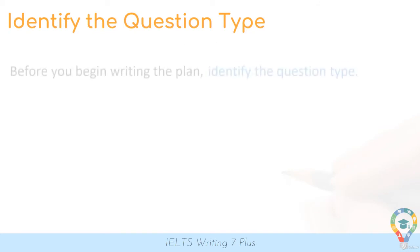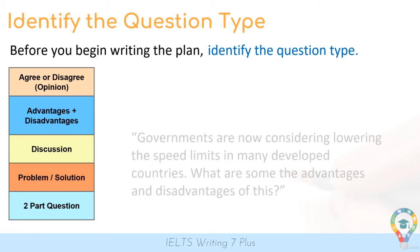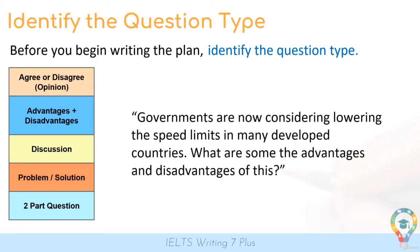Let's try another one. Here are the five question types and the next question: 'Nowadays, more and more people are deciding to live alone instead of with family or friends. What are some of the reasons for this? Is it a good thing?' It is, in fact, a two-part question as you're being asked two different questions. And one more example: 'Governments are now considering lowering the speed limits in many developed countries. What are some of the advantages and disadvantages of this?' That's an advantages and disadvantages question type.